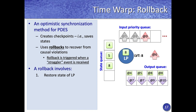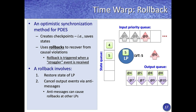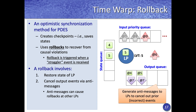First, the state of the logical process is restored. In this example, the most recent checkpoint before the straggler is at time 5, so the logical process rolls back its local virtual time to time 5. Next, all output events generated after time 5 are no longer valid and must be canceled. Anti-messages are generated and sent to other logical processes to cancel those prior events.